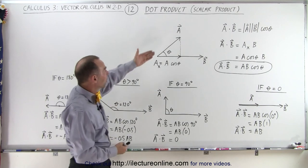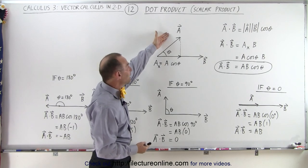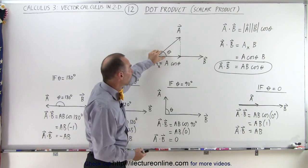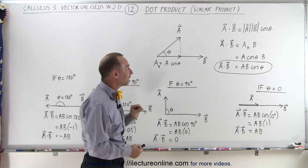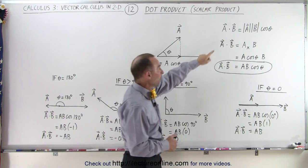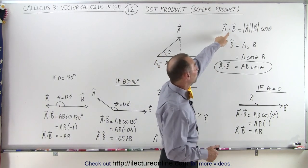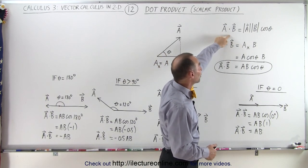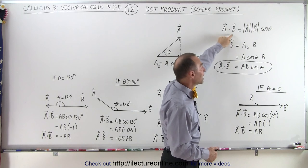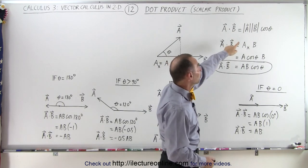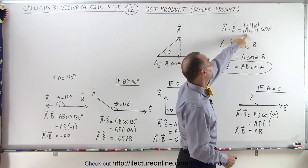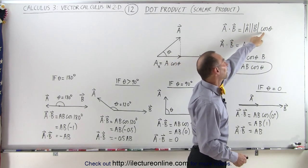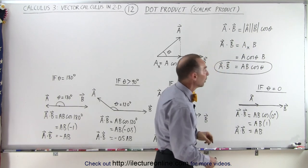When you have two vectors, let's say vector a and vector b, and there's an angle theta between the two vectors, notice that the dot product — denoted by a dot between the two vectors, a·b — is equal to the magnitude of a times the magnitude of b times the cosine of the angle theta.